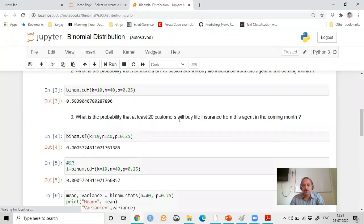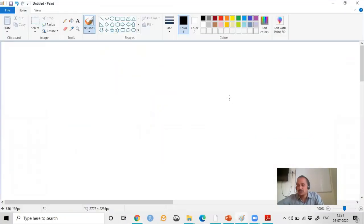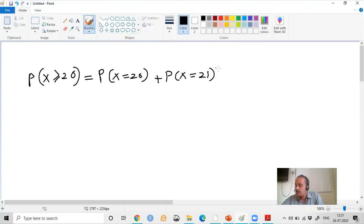The next task is finding the probability that at least 20 customers will buy insurance. At least 20 means probability X equals 20 or probability X equals 21, and likewise up to probability X equals 40, because at most he's going to interview 40 customers.